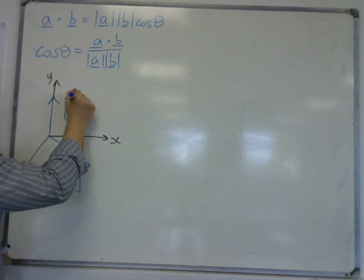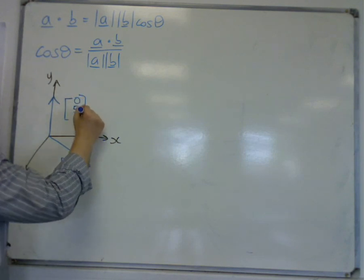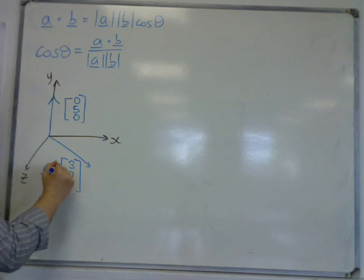And then I look at another vector and let's say it just goes upwards. So it's 0, let's say 5, 0. Let's call this a and this b.